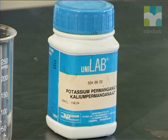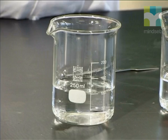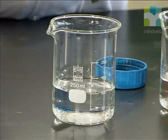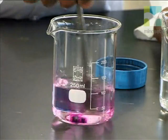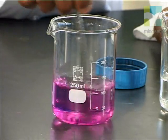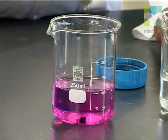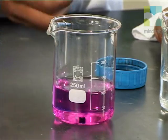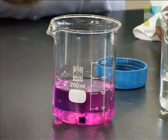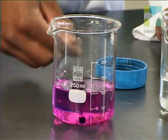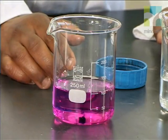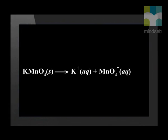Here we have some potassium permanganate in solid form, and here we have a beaker of water. Watch what happens as we add the potassium permanganate to the water. It immediately starts to disperse, and as we watch, we can see that the potassium permanganate spreads out throughout the beaker until all the liquid in the beaker is purple in colour. Do you see how the potassium permanganate mixed into the water totally? We can write what happened as a balanced equation: in water, the ionic substance potassium permanganate breaks up into its component ions, potassium and permanganate.